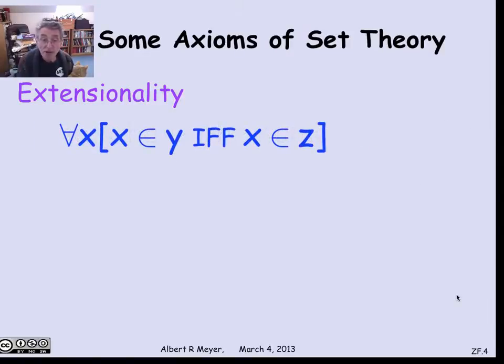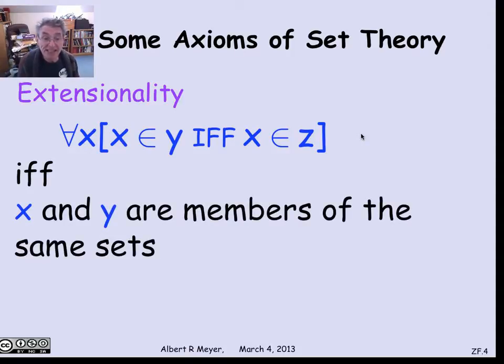We could write this as a predicate formula in set theory as for all z, z is a member of y if and only if z is a member of x. We could use this as a definition of equality. But we don't really need to introduce equality as a basic part of the language and add axioms about how it behaves. There's one axiom that covers things adequately.